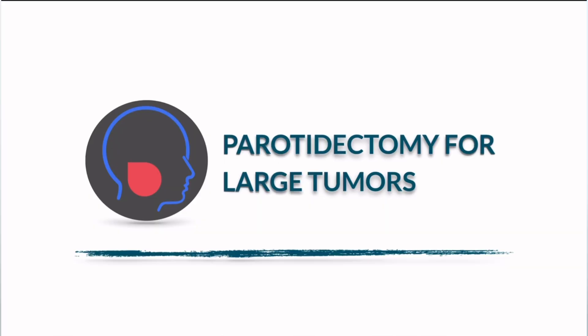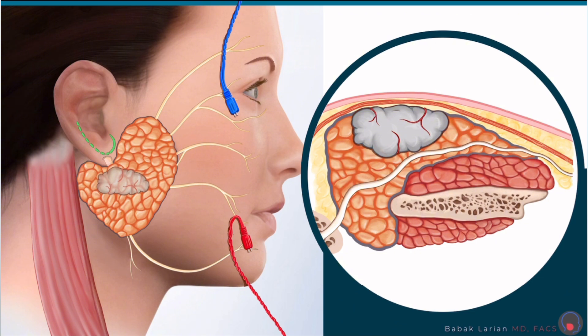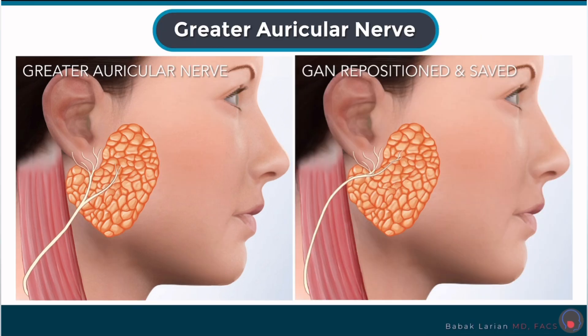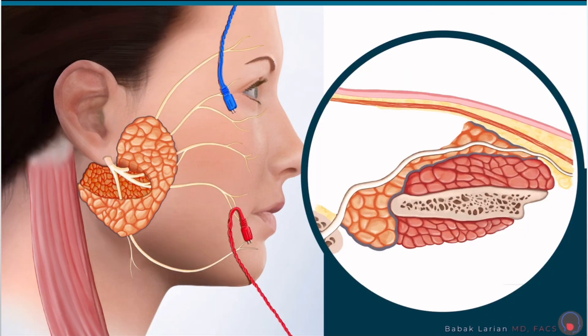Now, if you have a larger tumor like this, and I'm trying to take out the tumor again with a little bit of extra parotid tissue, again I'll save the greater auricular nerve for sensation, and I'll find the facial nerve and all the relevant branches in the area, remove the tumor and the extra parotid tissue around it, which is leaving me here a large gap. I'm not going to be able to overcome this gap by bringing the two edges together.